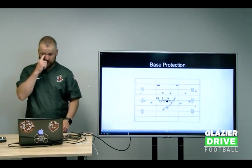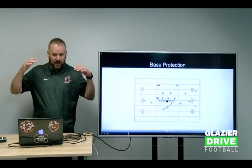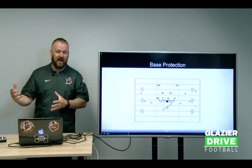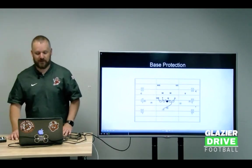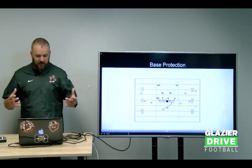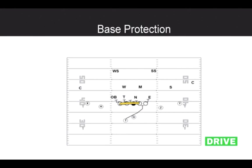Here are our base protections. We are a slide side / zone side / man side scheme up front for pass protection. Our base protection has a zone side — I make the call of where the zone side is. On the man side, the tackle is locked. If there's a three-technique, the guard would be locked and wouldn't slide. But if there's no three-technique in the B-gap or head-up two-technique, he's in on the zone side.